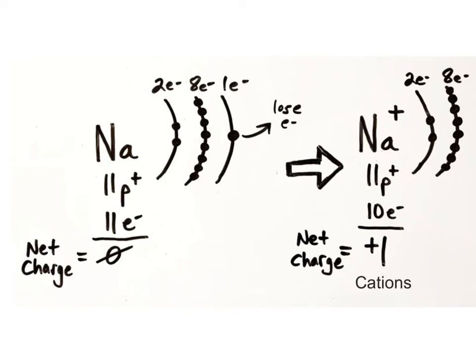Positively charged ions are called cations. You can remember this term using the phrases "plussy cats" or "I positively hate cats."